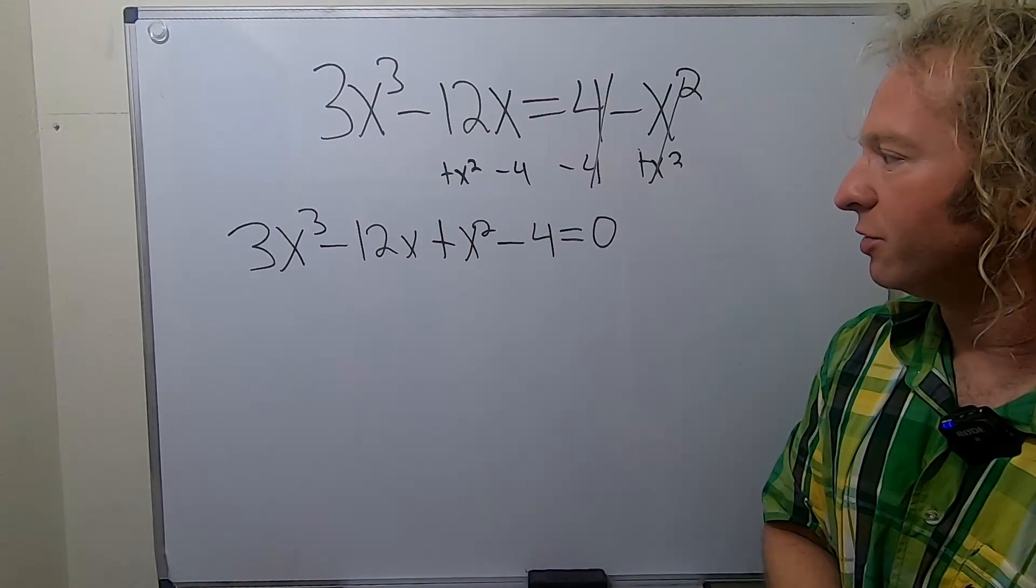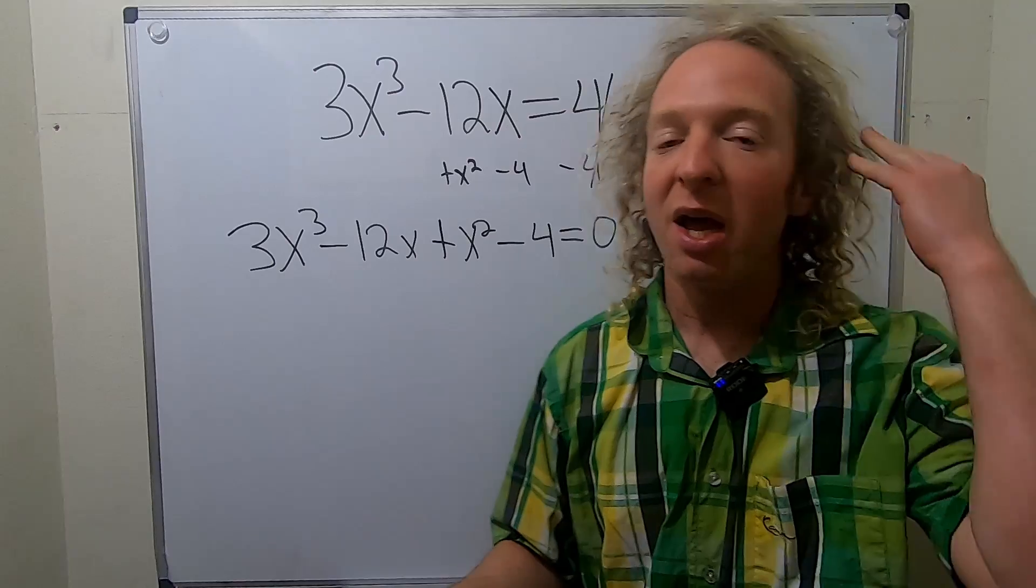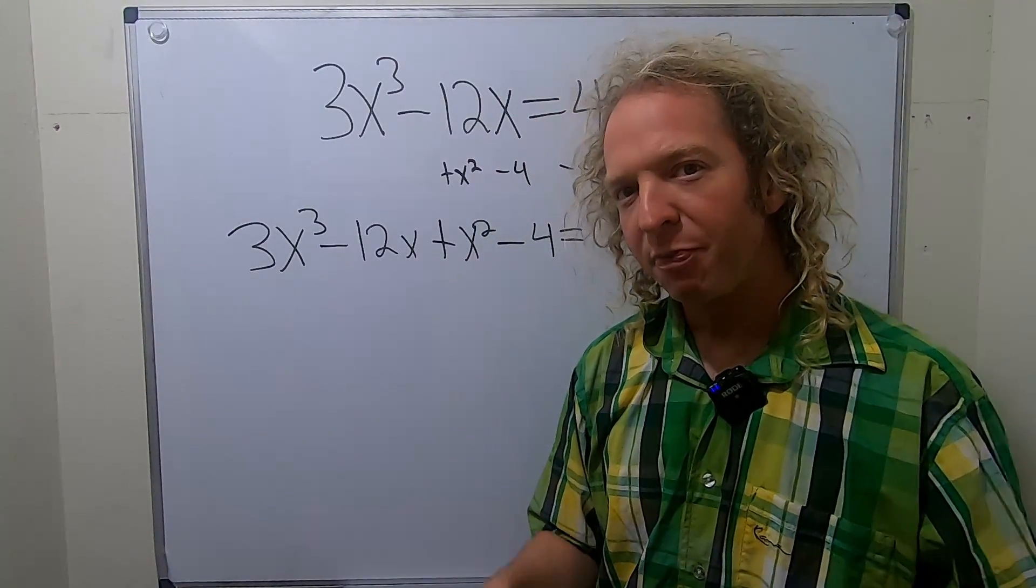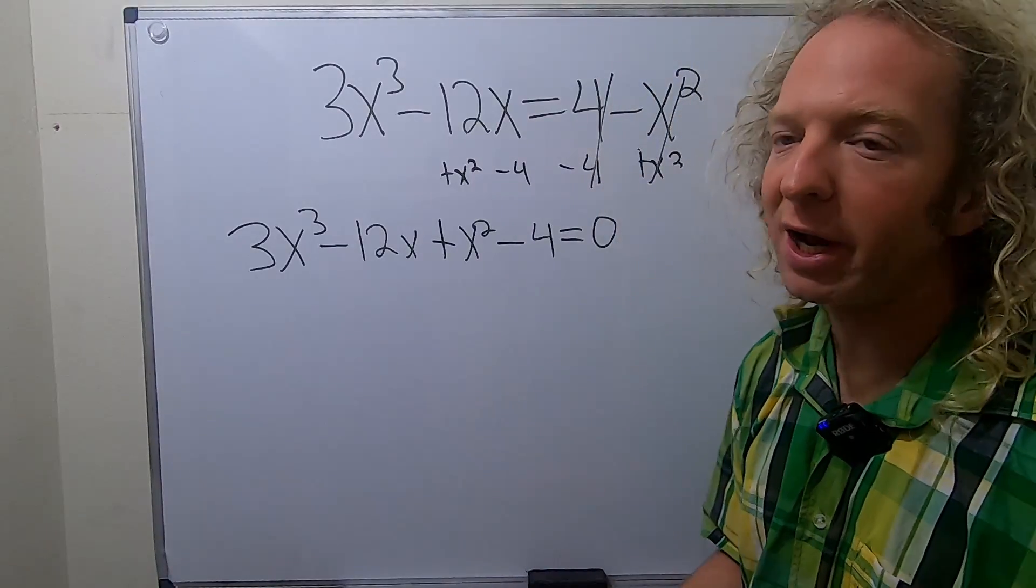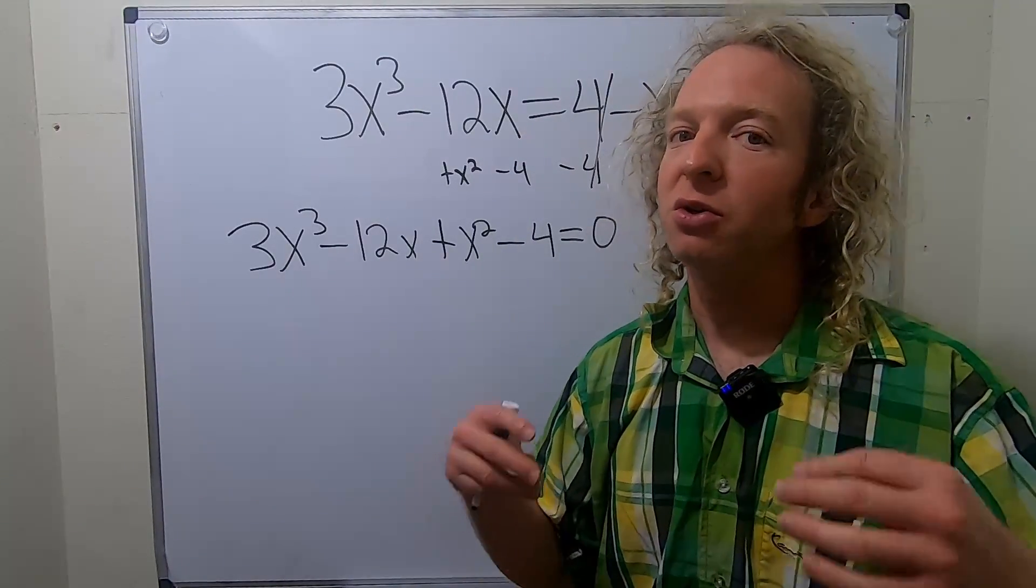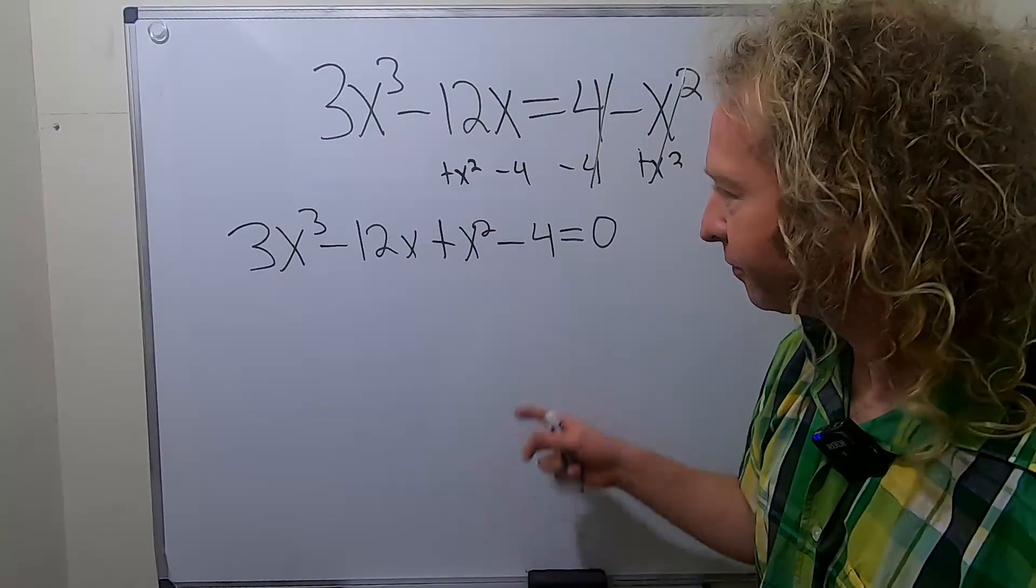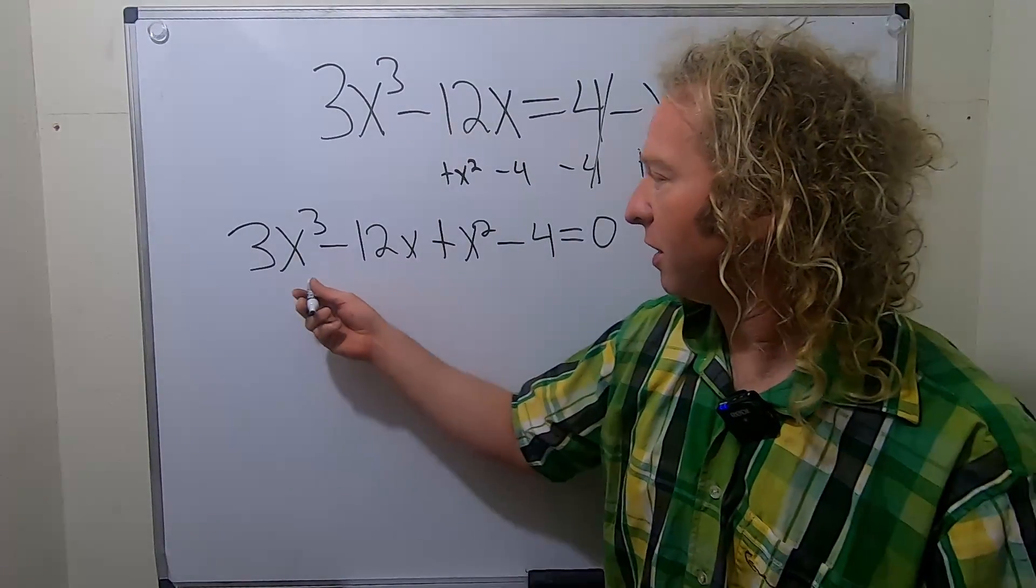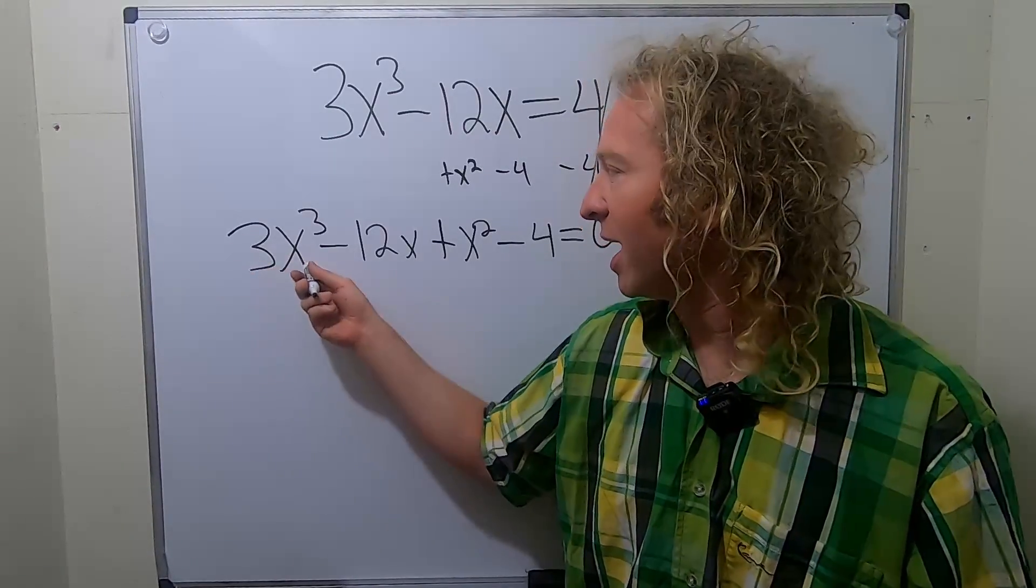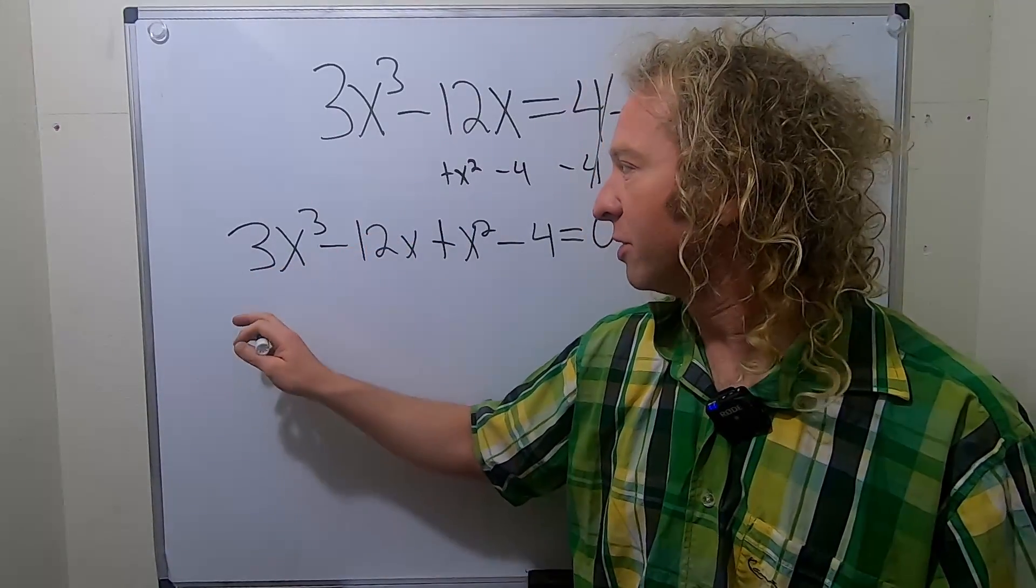All right, the next thing we want to do is try to factor this. As a general rule in mathematics, whenever you have four terms, the first thing you should always try is factor by grouping. It might not always work, but you should always at least mentally try it. So to do that, you want to think about what you can factor here. So it looks like we can factor out a 3x from both of these terms.